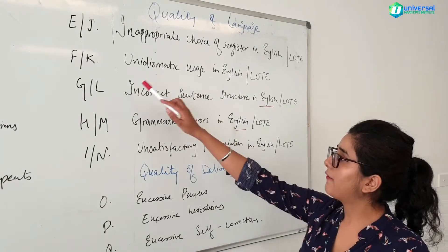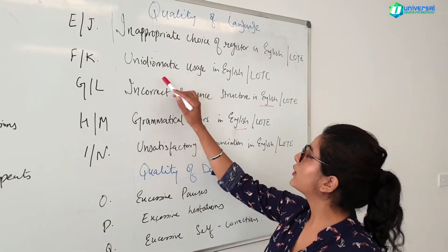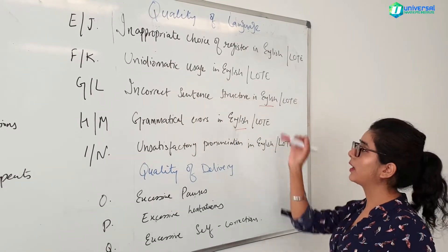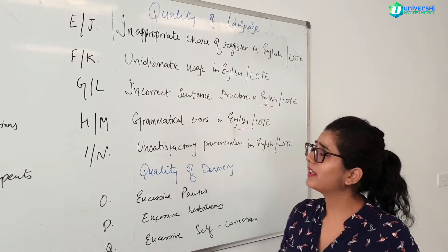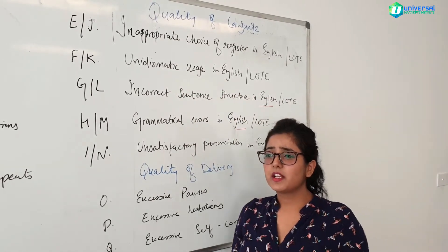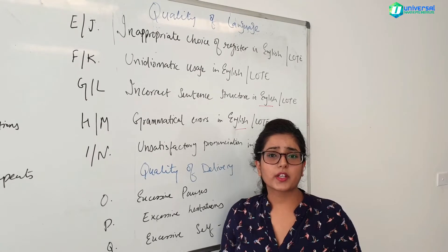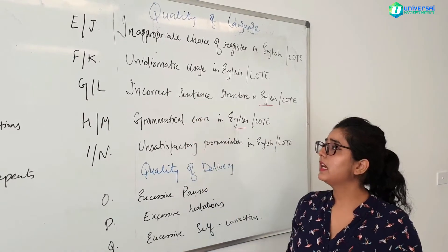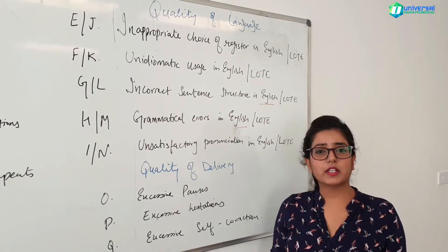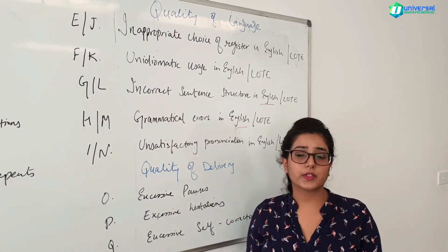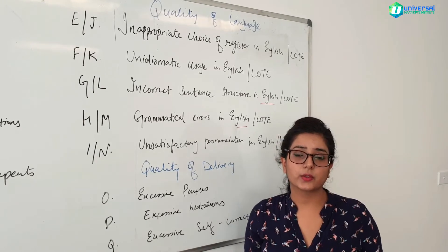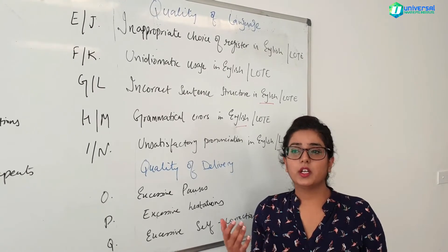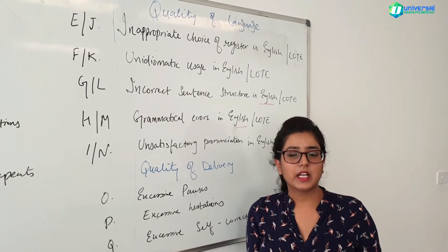Codes F and K refer to unidiomatic usage in English and language other than English. This is a code that people often don't understand. Basically, it means you are not sounding very natural — you are sounding unnatural. You have to sound like a native speaker, so if you are using words and terminology that don't sound native, you will lose marks.